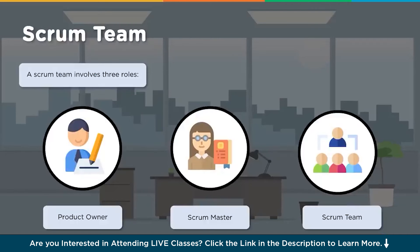The scrum team involves the product owner, scrum master, and scrum team - each having their own objectives. These roles cannot be merged; for example, the roles of product owner and scrum master cannot be given to a single individual because it conflicts the objectives of both roles. Having one team member become both scrum master and product owner will not give the required results.